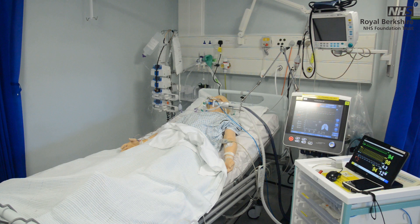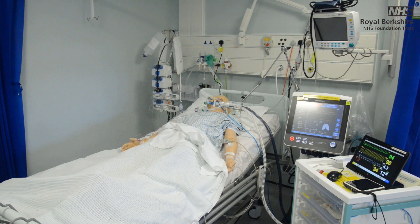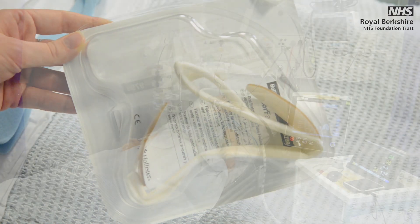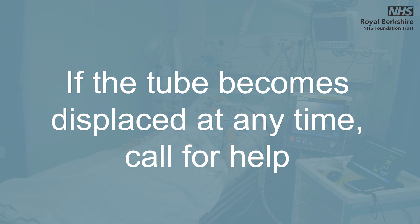Avoid tying the tapes around the connector at the end of the tube, as this can become disconnected. Tube ties for both airways may vary between different trusts, so ensure you familiarise yourself with these. Here we are showing an AnkaFast system. If the tube becomes displaced at any time, or you are worried, call for help.